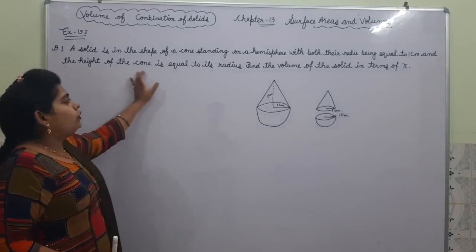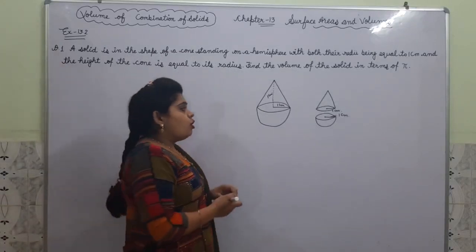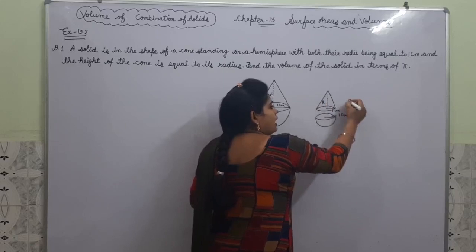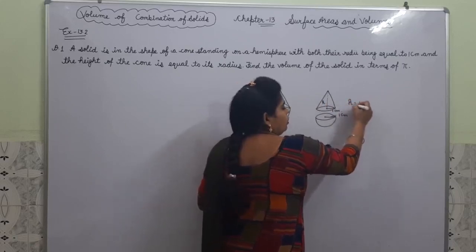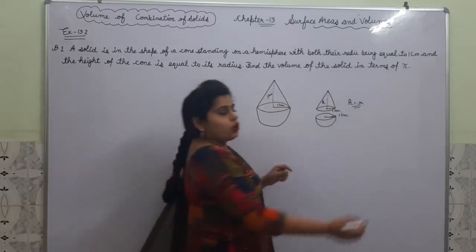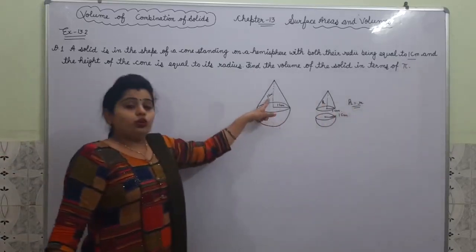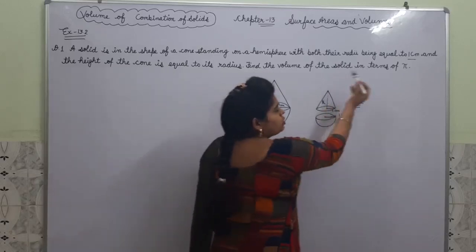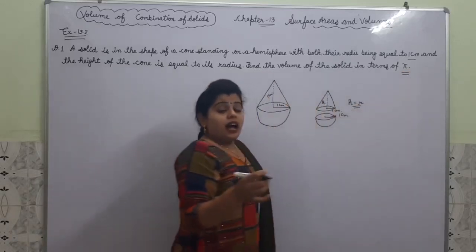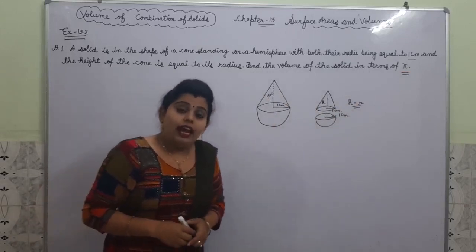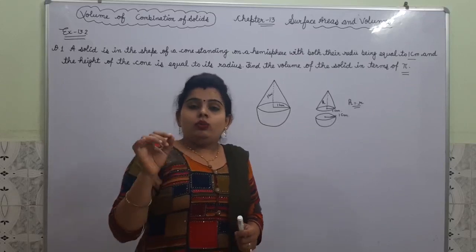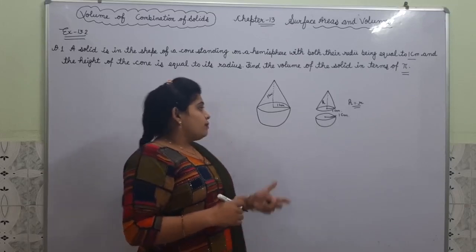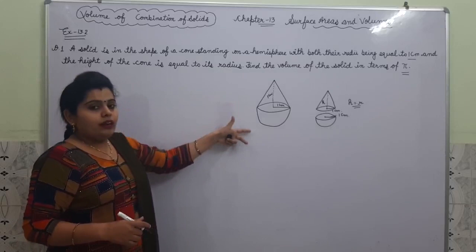And the height of the cone is equal to its radius. So the height of the cone equals the radius of the cone. Since our radius is equal to 1 cm, the height will also equal 1 cm. We have to find the volume of the solid in terms of pi — no need to substitute pi as 22/7 or 3.14.